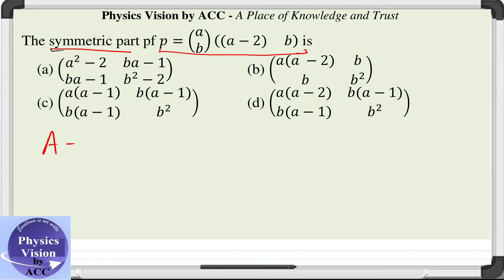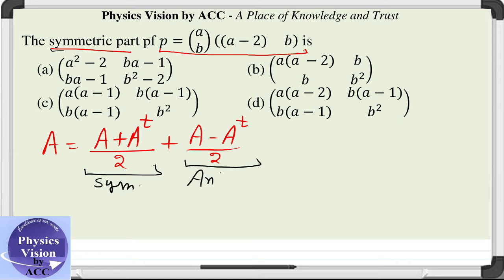Any matrix can be resolved into two components: A plus A transpose by 2, plus A minus A transpose by 2. In these two parts, one part is the symmetric part of the matrix and another part is the anti-symmetric part of the matrix. This is a basic property we already know.